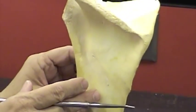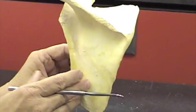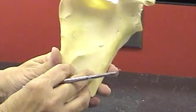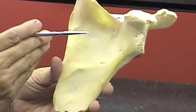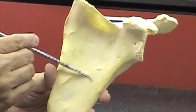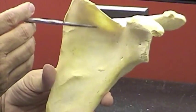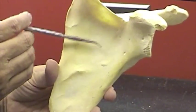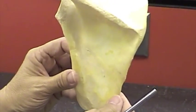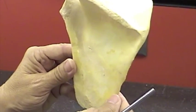This is the posterior aspect of the scapula. I'm going to turn this over and we'll see the anterior aspect of it. The anterior aspect also has a depressed area. This is called the subscapular fossa. This is the way the scapula looks posteriorly.